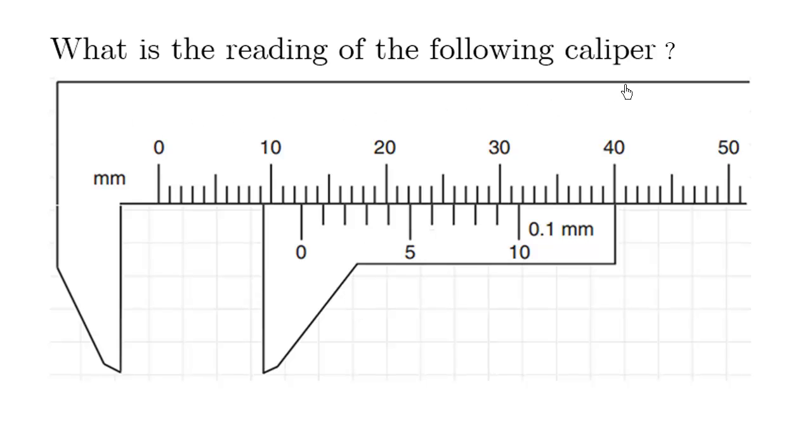What is the reading of the following caliper? Let's begin by looking at this zero. This is where we need to focus our eyes. The reading here is approximately after 10. This is 10 millimeters. So this is 10, 11, 12. We're definitely past 12, so we're at 12 millimeters.